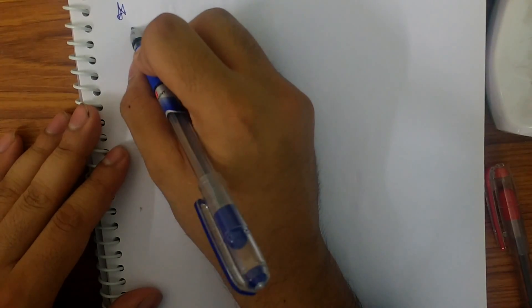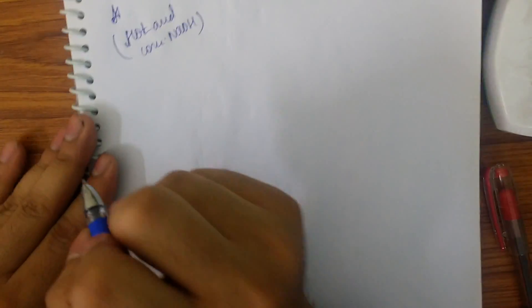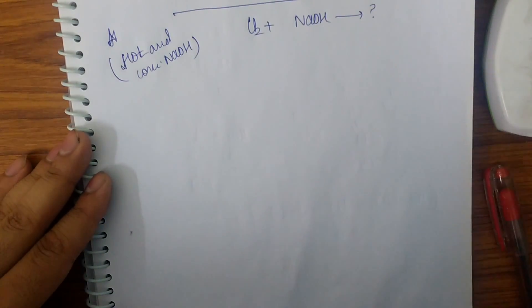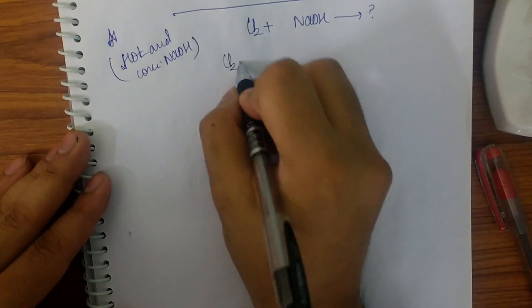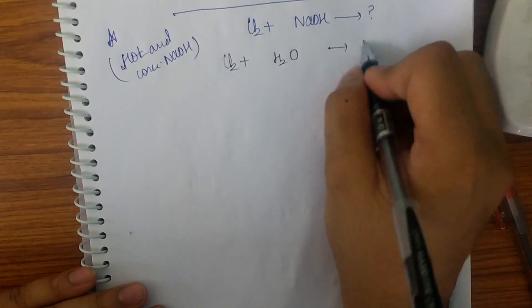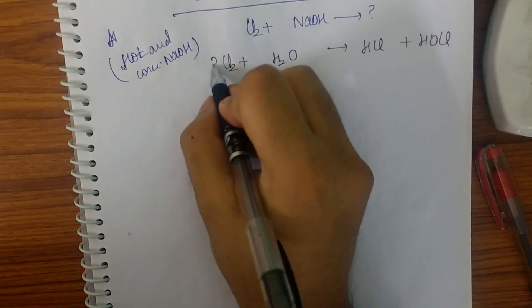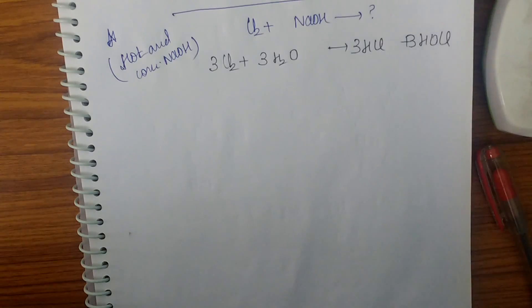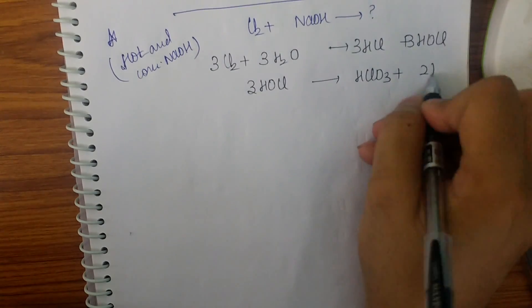We can derive all reactions by the same mechanism instead of memorizing them. Now if I take hot and concentrated NaOH: Cl2 plus NaOH gives question mark. Since water must be present, Cl2 plus H2O gives HCl plus HOCl. Since it is hot and concentrated, I multiply by three and we get a product of higher oxidation state. So three HOCl breaks into HClO3 plus 2HCl.